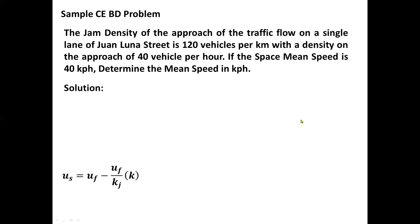For our solution, we will be using this formula: U sub s equals U sub f minus U sub f all over K sub j times K. So direct substitution, our U sub s value is equal to 40, while K sub j equals 120, and K equals 40. So what we're looking here is for the value of U sub f.